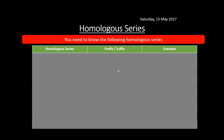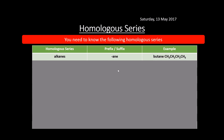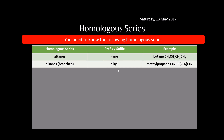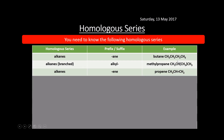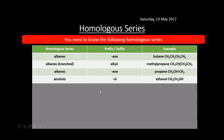You need to know a few of these homologous series. Alkanes end in -ane; an example is butane. Alkanes that are branched have alkyl in them — for example, methylpropane, which has a methyl group hanging off a propane. Alkenes end in -ene, so that is propene for example. Alcohols end in -ol, for example ethanol.